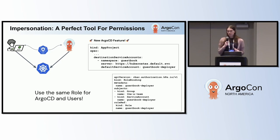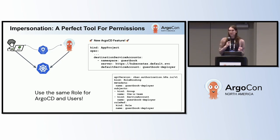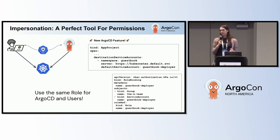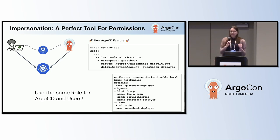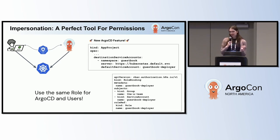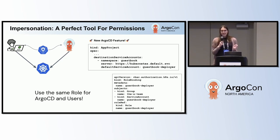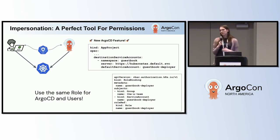Impersonation is a relatively new Argo CD feature, but it's really powerful for managing permissions and keeping permissions in sync between Argo CD and Kubernetes. In a Kubernetes context, it lets one user basically assume the role of another user and assume those permissions. Using this with Argo CD lets us define a single role for a team or group and bind that same role to both an Argo CD user and the human users actually accessing Kubernetes directly.